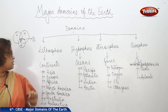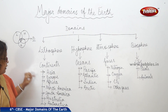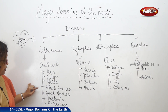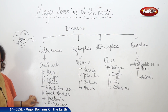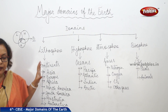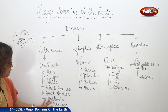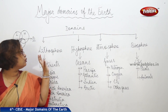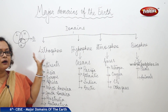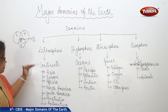The major rocky part of the earth consists of all continents, and we divide it into seven continents. Their names are Asia, Europe, Africa, North America, South America, Australia, and Antarctica. Together, these seven continents make up the lithosphere of the earth.